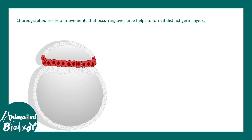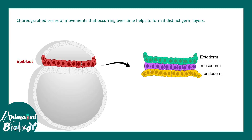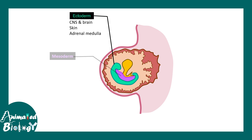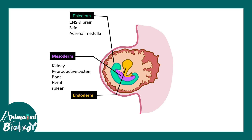Gastrulation is a choreographed series of movements which helps to form three important germ layers: ectoderm, mesoderm and endoderm, each of which is important for organogenesis. The ectoderm gives rise to the central nervous system, brain, skin, and adrenal medulla, to name a few. Mesoderm gives rise to kidney, reproductive system, bone, heart and spleen, whereas endoderm gives rise to the GI tract, liver, endocrine system, urethra and bladder. Gastrulation is therefore the first milestone that must be achieved during development.